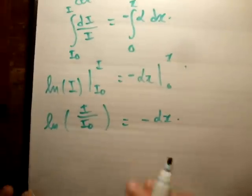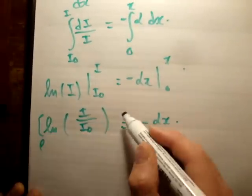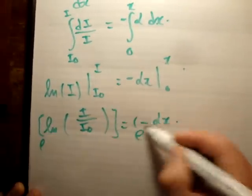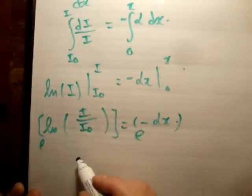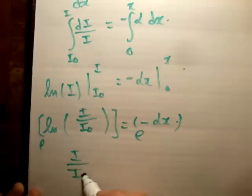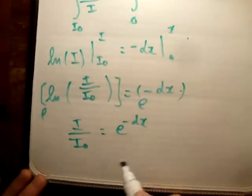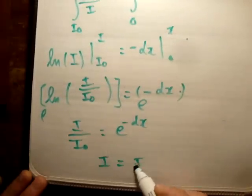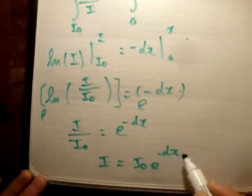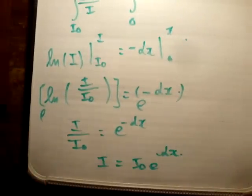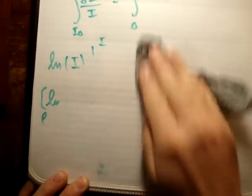We know that exponentials and logarithms are inverses. So this is just going to cancel. I'm going to get I over I0 equals e to the minus alpha x. And finally, I equals I0 e to the minus alpha x. You've probably seen this particular integral done many times, but that's it there.